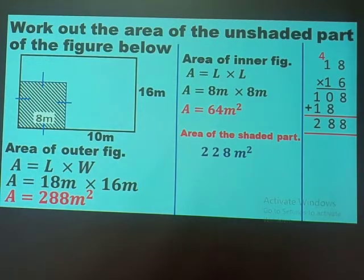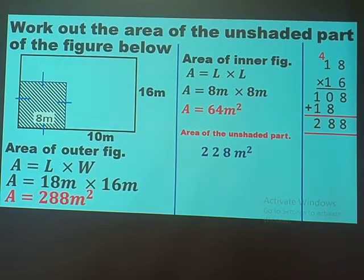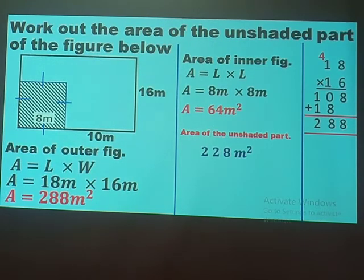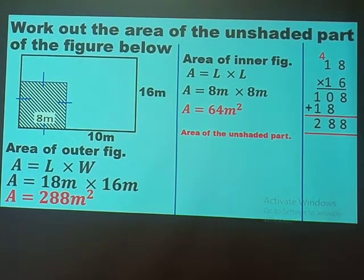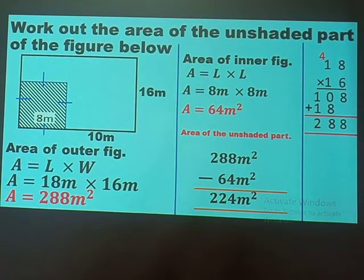The area of the unshaded part equals the area of the bigger figure take away the area of the inner figure. Note: the outer area is 288, not 228. So: 288 square meters take away 64 square meters gives a final answer of 224 square meters. That is example number two — let's look at the last one.